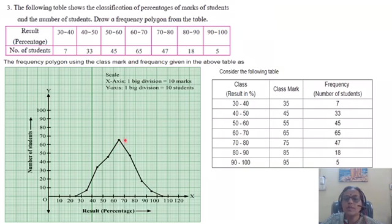Note it down. Then the next is 75, 47. 75, this is, and 47. This is 75, 47. The next is 85, 18. Next is 85 and this is 18.